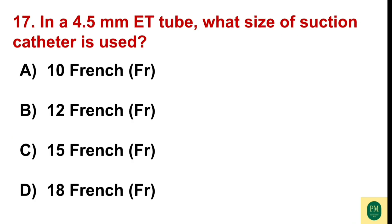For a 4.5 mm ET tube, what size of suction catheter is used? Option A: 10 French. Option B: 12 French. Option C: 15 French. Option D: 18 French. The correct option is Option A — 10 French.